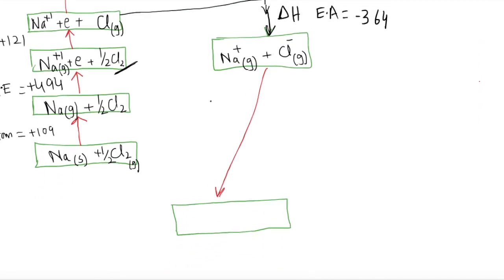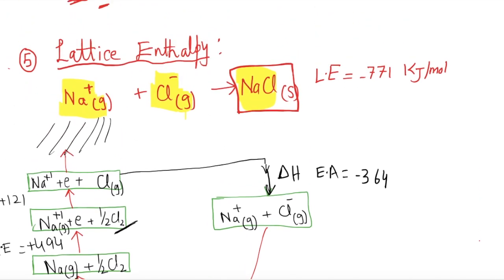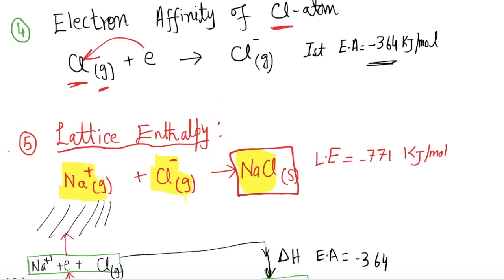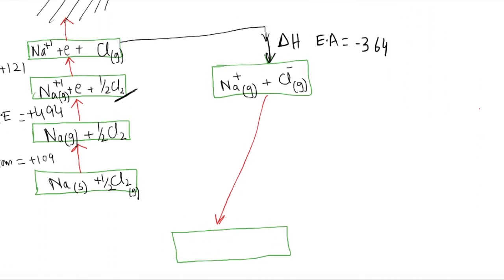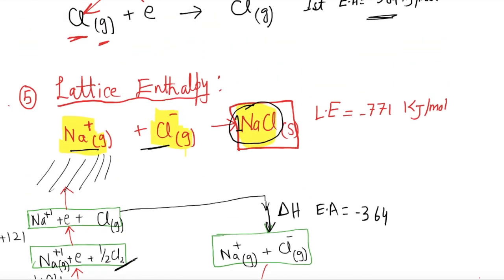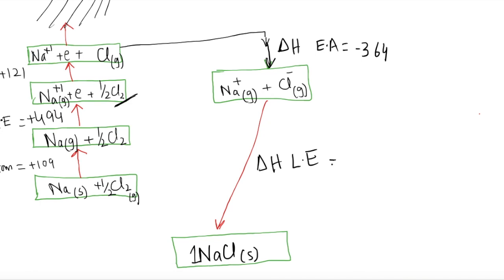In the last step, we apply lattice enthalpy. One mole of ionic compound is formed from its gaseous ions. The gaseous Na⁺ and Cl⁻ ions attract each other, forming one mole of solid sodium chloride. This is delta H° of lattice enthalpy, and the energy released is −771 kJ/mol. This completes the first route for forming NaCl.